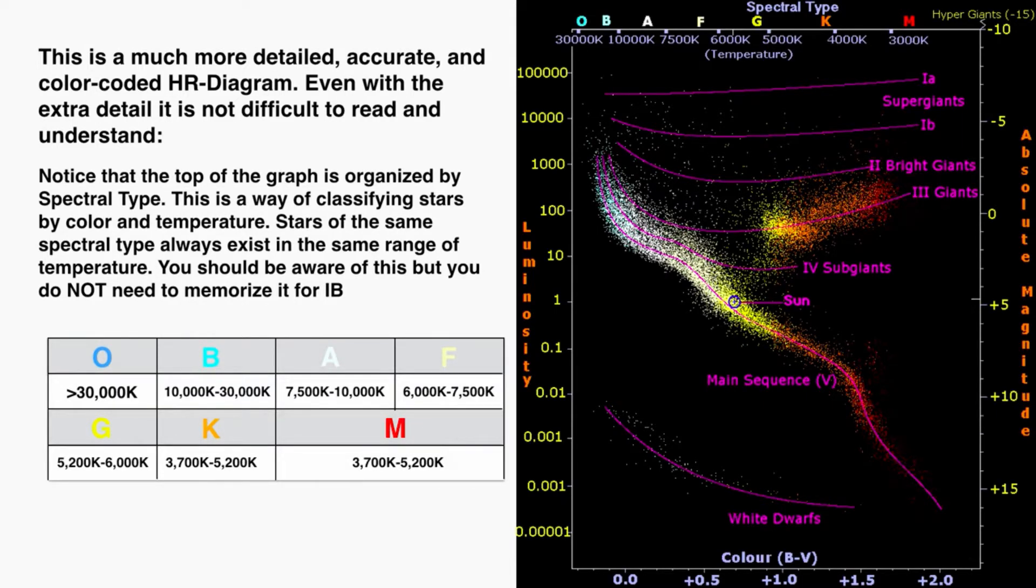The names of the spectral types are really just names for ranges of temperature and the color that the stars appear as. The letters are O-B-A-F-G-K-M, and each one corresponds to a different color of star and a different range of temperature. If a star is spectral type B, its temperature must be between 10,000 and 30,000 Kelvin. If it's spectral type K, it must be between 3,700 and 5,200 Kelvin.